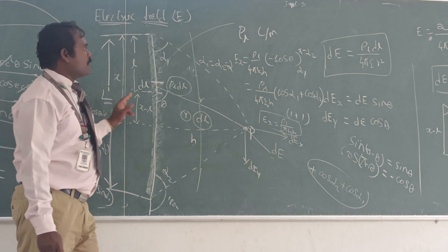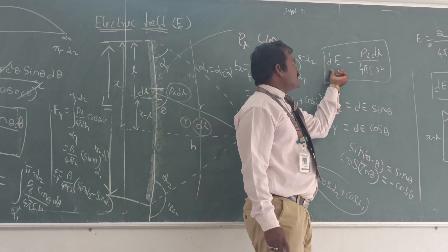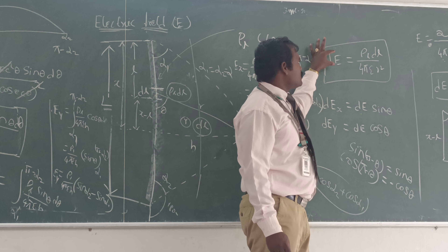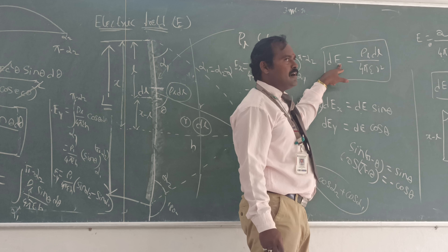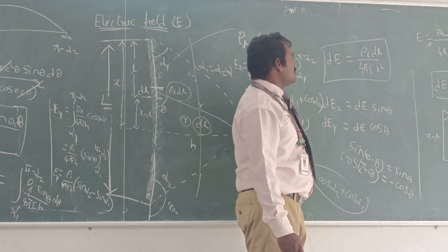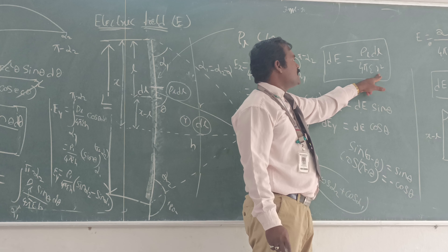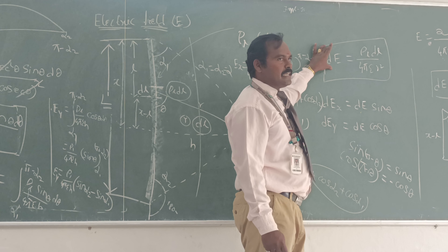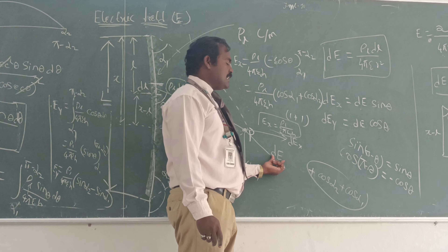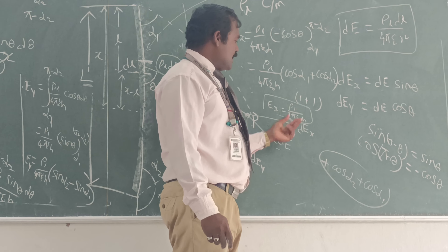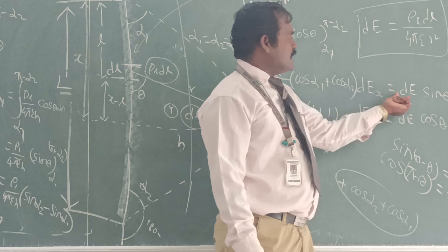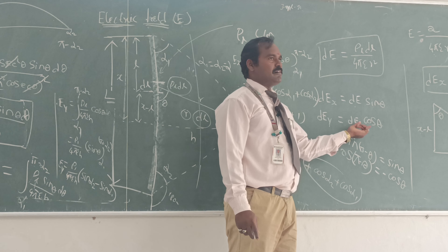We know the electric field intensity for the smaller portion dL, so we consider the differential electric field intensity as well. The differential electric field intensity dE equals rho L times dL divided by 4 pi epsilon times R squared. We can consider the X component as well as the Y component, so dEx equals dE sin theta and dEy equals dE cos theta.